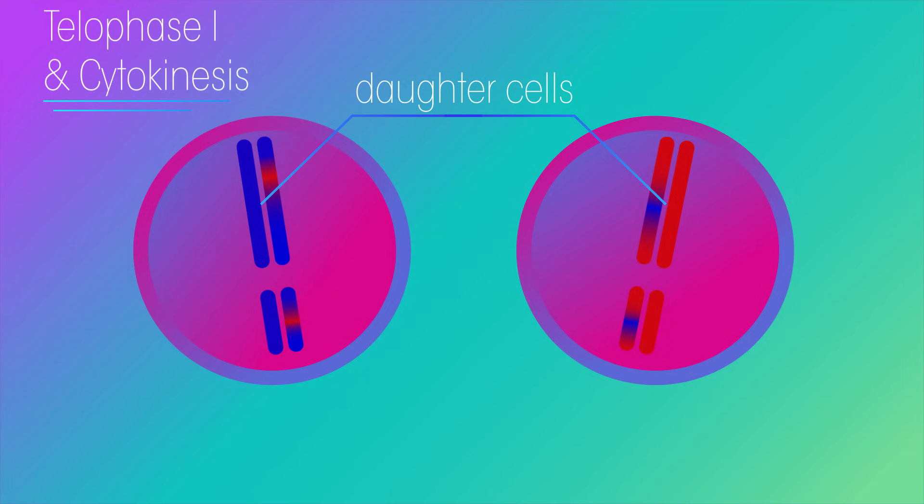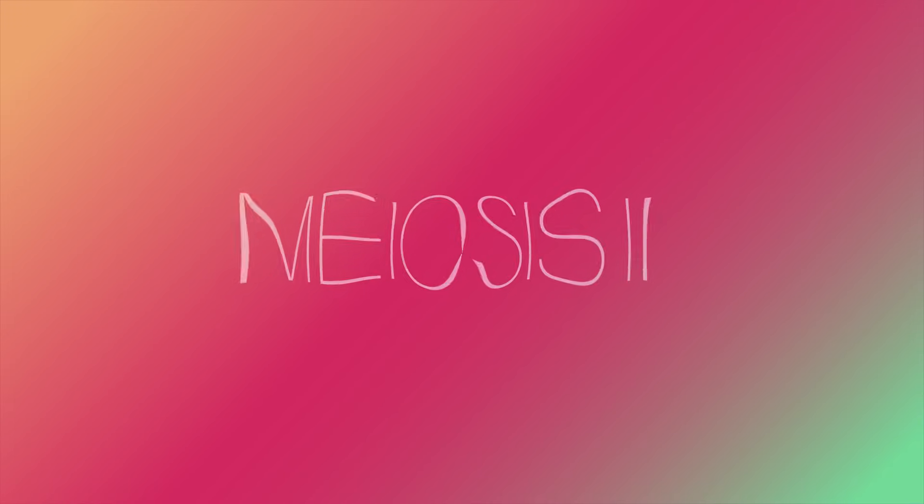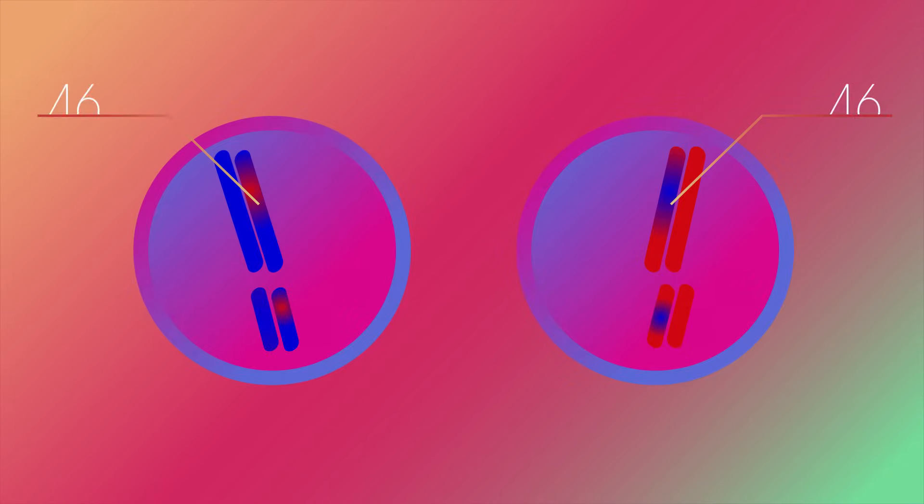That's the end of meiosis one. Now for part two, we start with our recombined daughter cells, each still with 46 chromosomes. But sperm and egg cells only have 23 chromosomes, so we need to cut these cells in half.